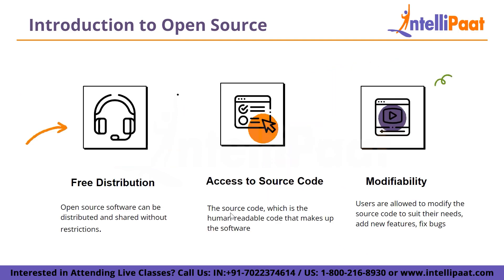There are certain key characteristics of open source. The first includes free redistribution, which means open source software can be redistributed and shared without restrictions — users can copy and distribute it to others without having to pay. Then comes access to source code: the human-readable code that makes up the software is accessible to anyone, allowing for scrutiny, learning and modification. Next comes modifiability: users are allowed to modify the source code to suit their needs, add new features, fix bugs or adapt it for different purposes, which encourages collaboration and innovation.